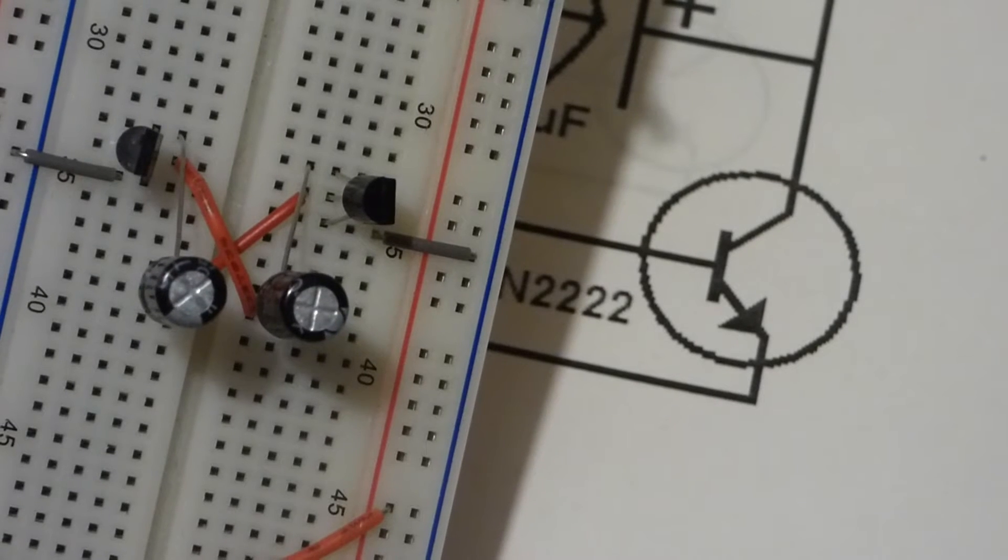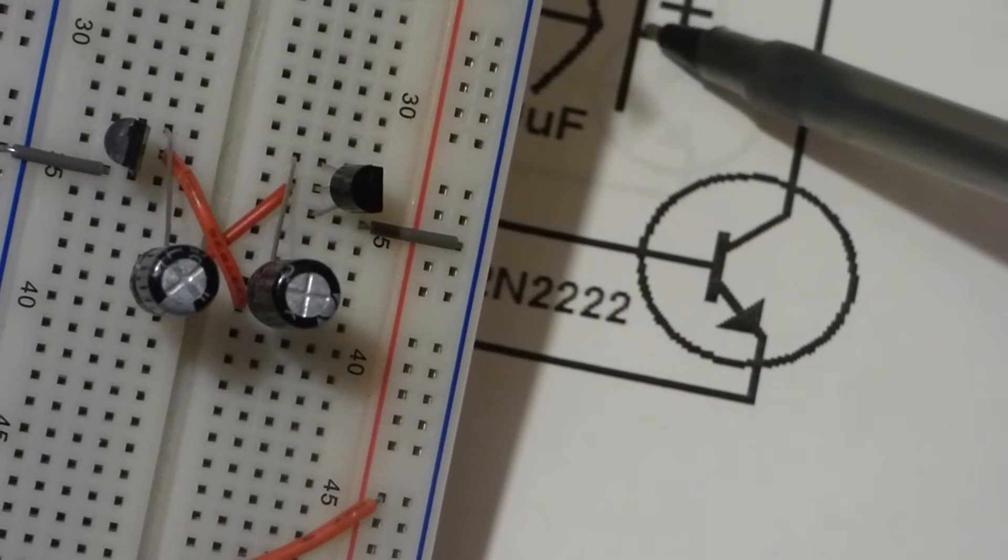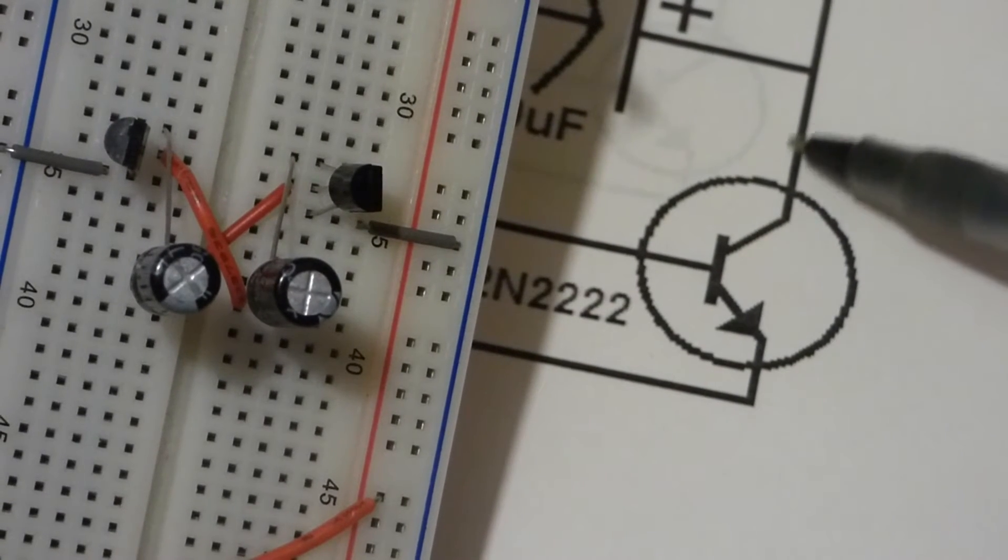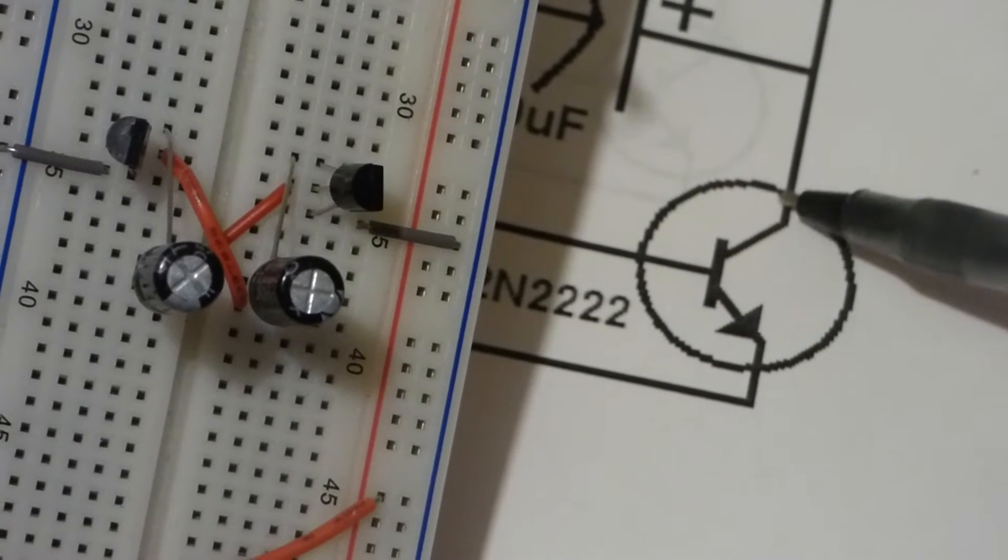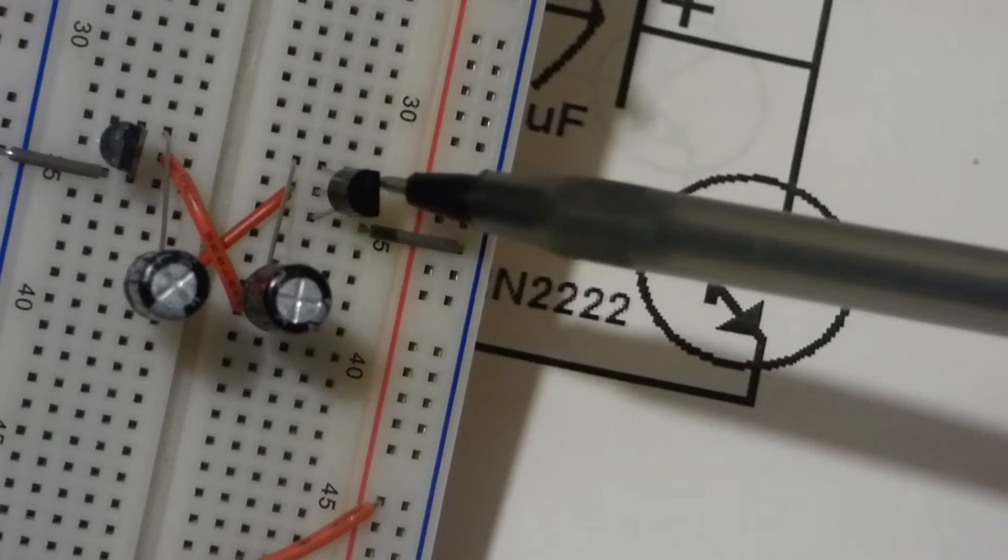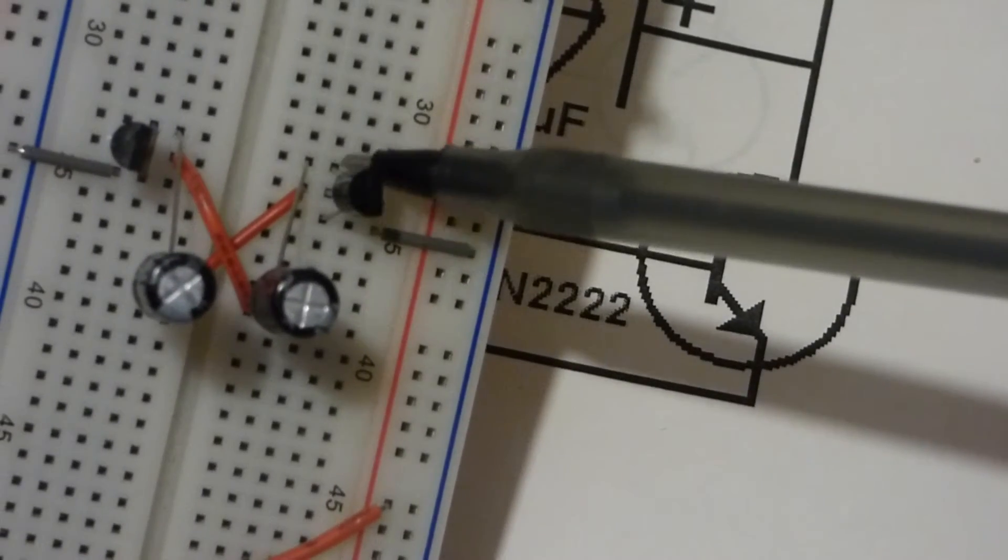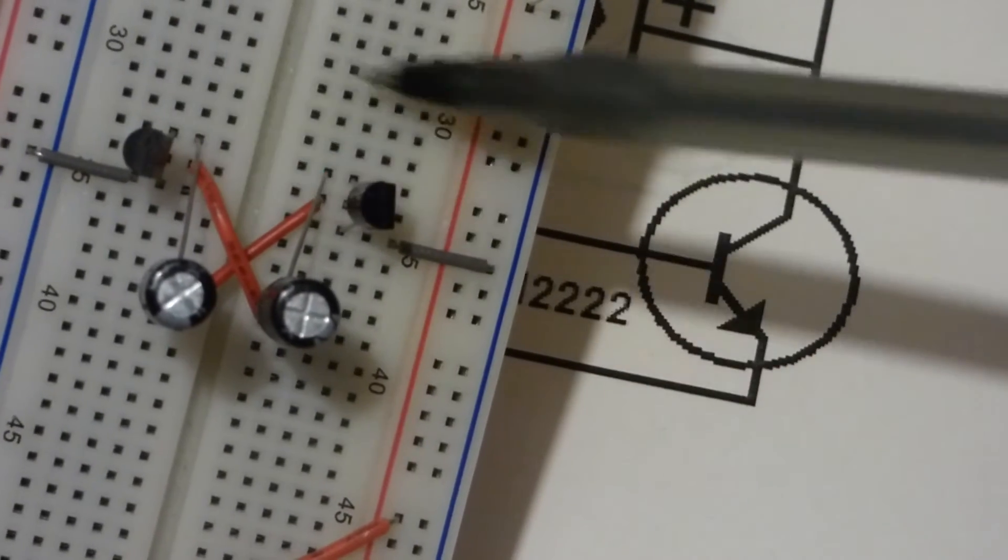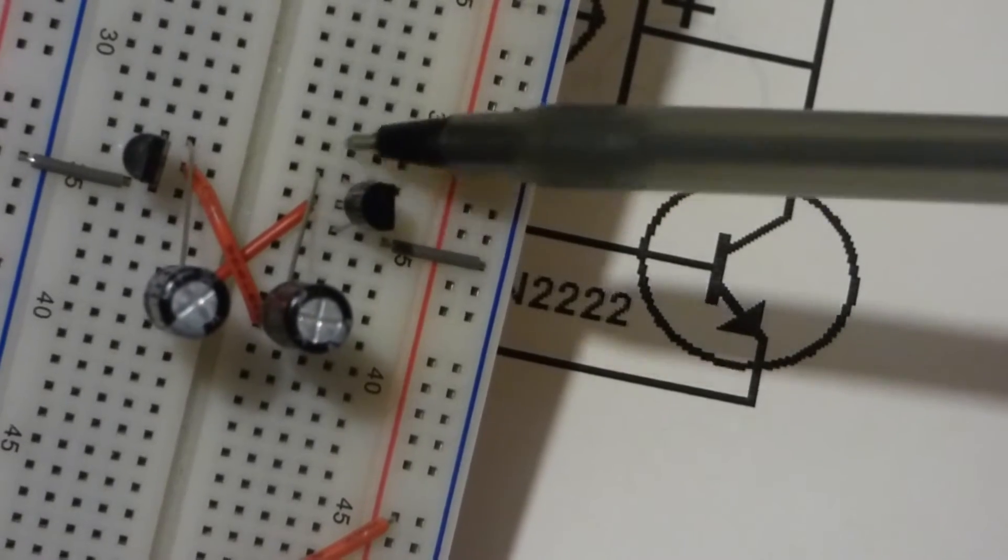So now, we come to a tricky part of the wiring. Here, you can see the positive side of the capacitor is connected to the collector of the transistor, which is the top pin because the flat side is to the right. And that's on both sides of the circuit. When you look at the schematic, you'll see that.